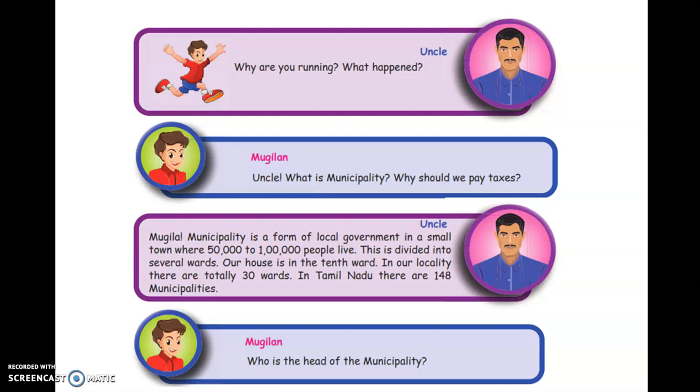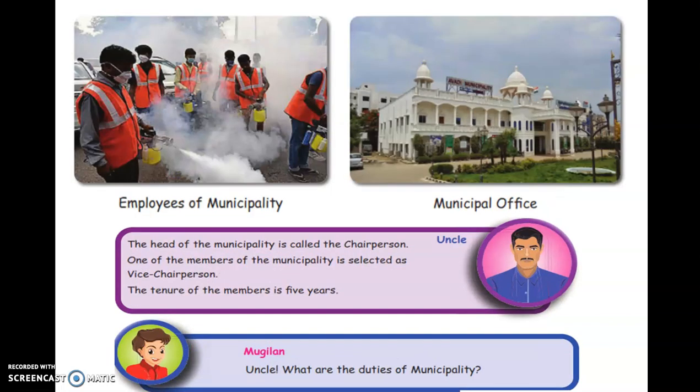Who is the head of the municipality, uncle? The head of the municipality is called the Chairman. One of the members of the municipality is selected as Vice Chairperson. The tenure of the members is five years.